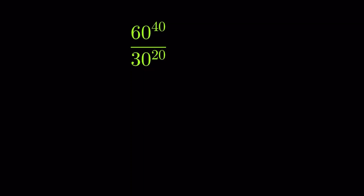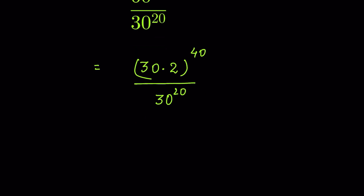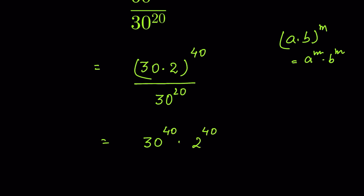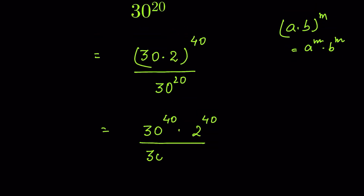60 to the power 40 upon 30 to the power 20 — how do we solve this? We can write 60 as 30 times 2, so the expression becomes 30 times 2, whole to the power 40, upon 30 to the power 20. Using the identity (A × B)^M = A^M × B^M, this becomes 30 to the power 40 times 2 to the power 40, upon 30 to the power 20.